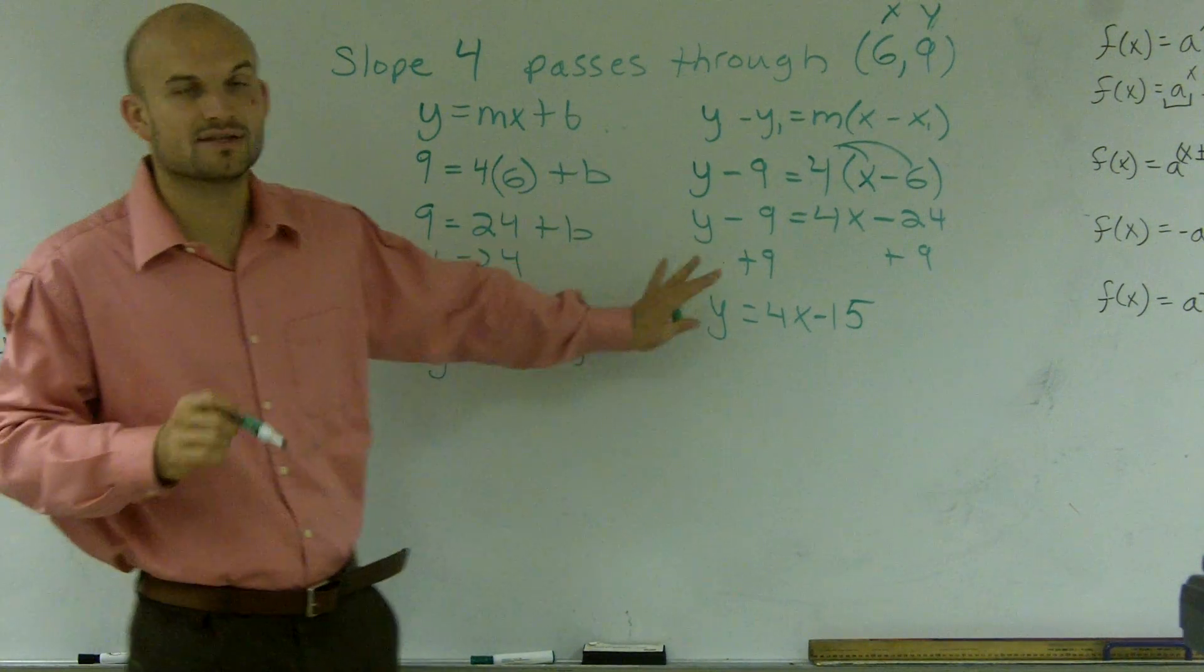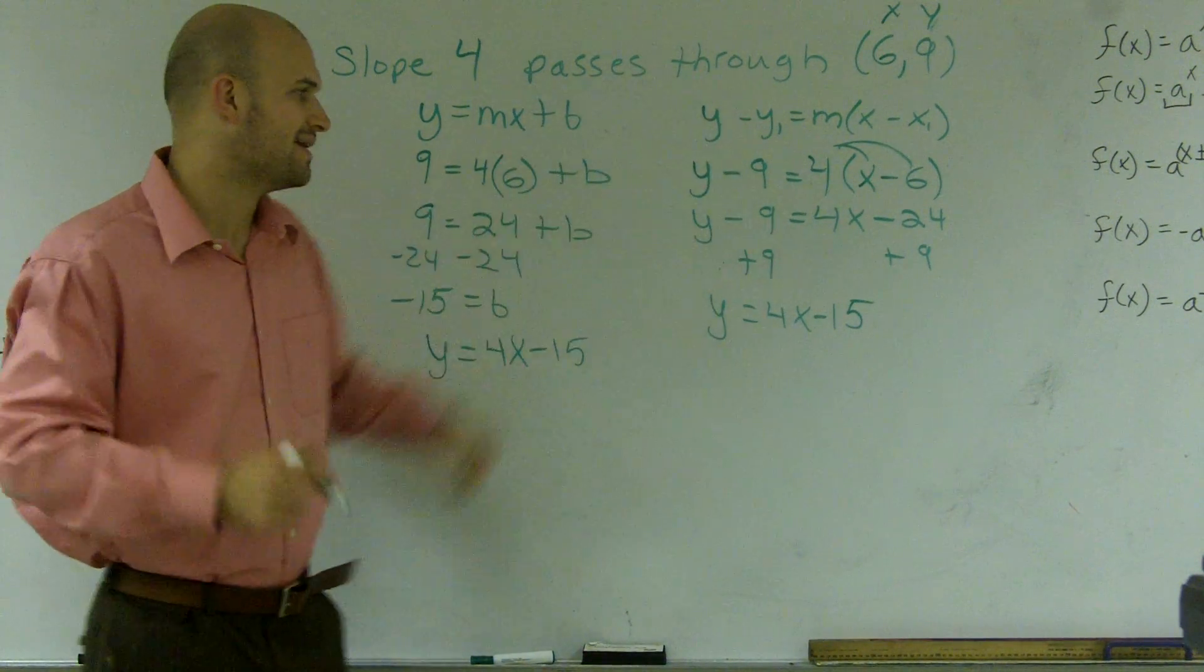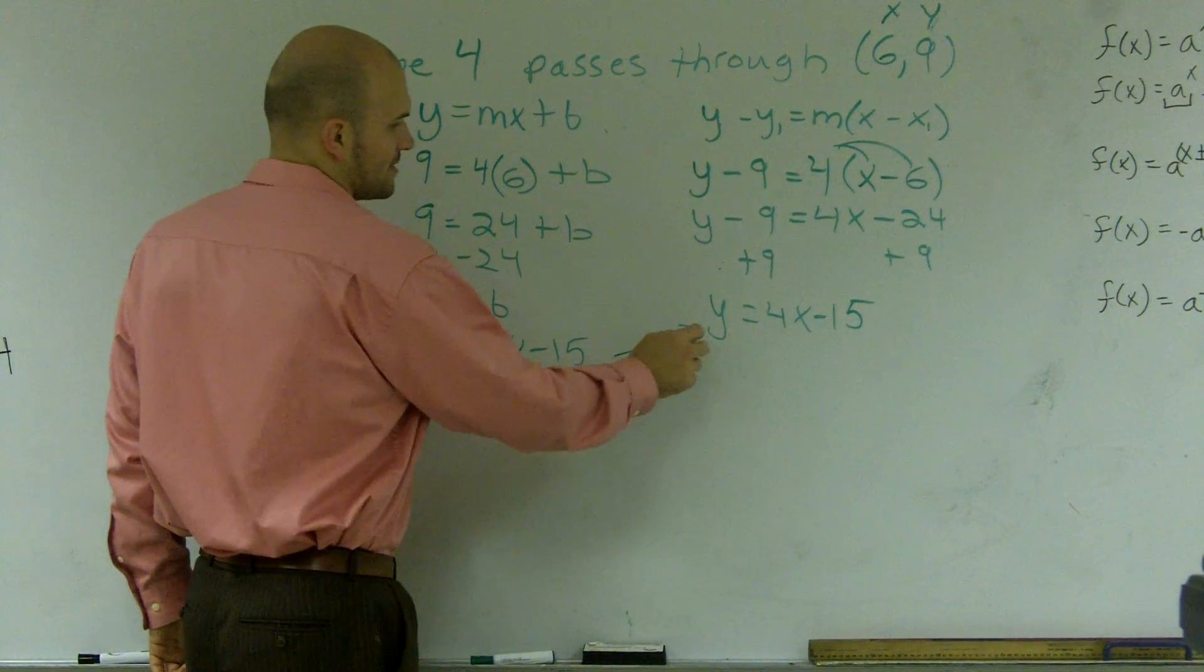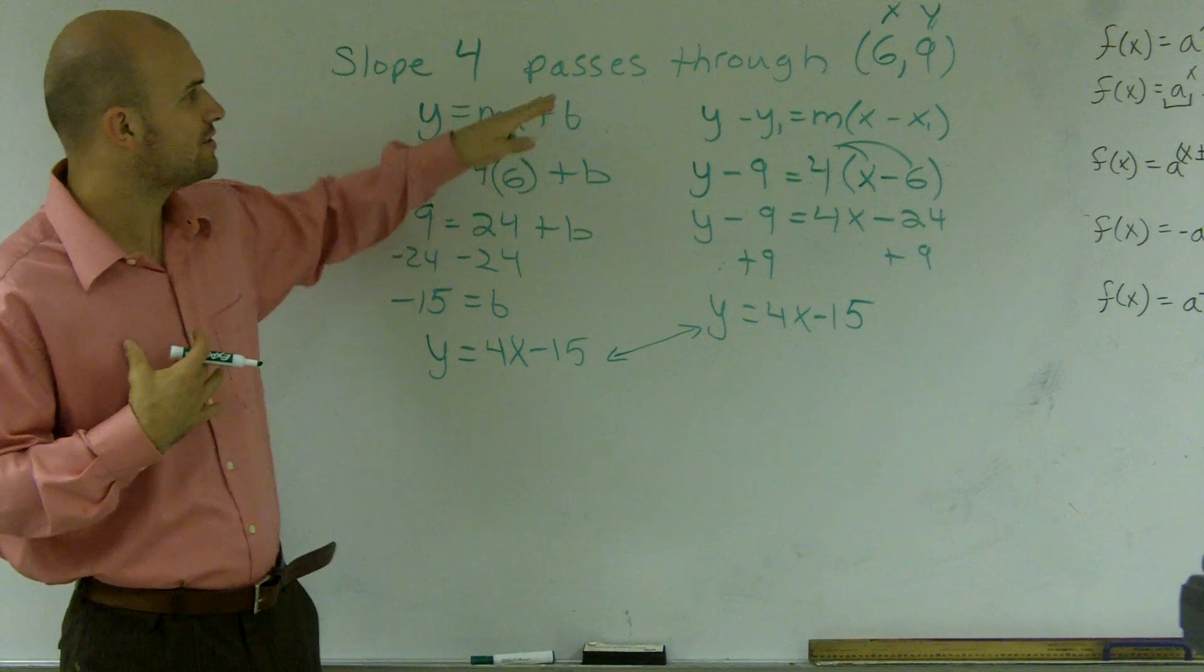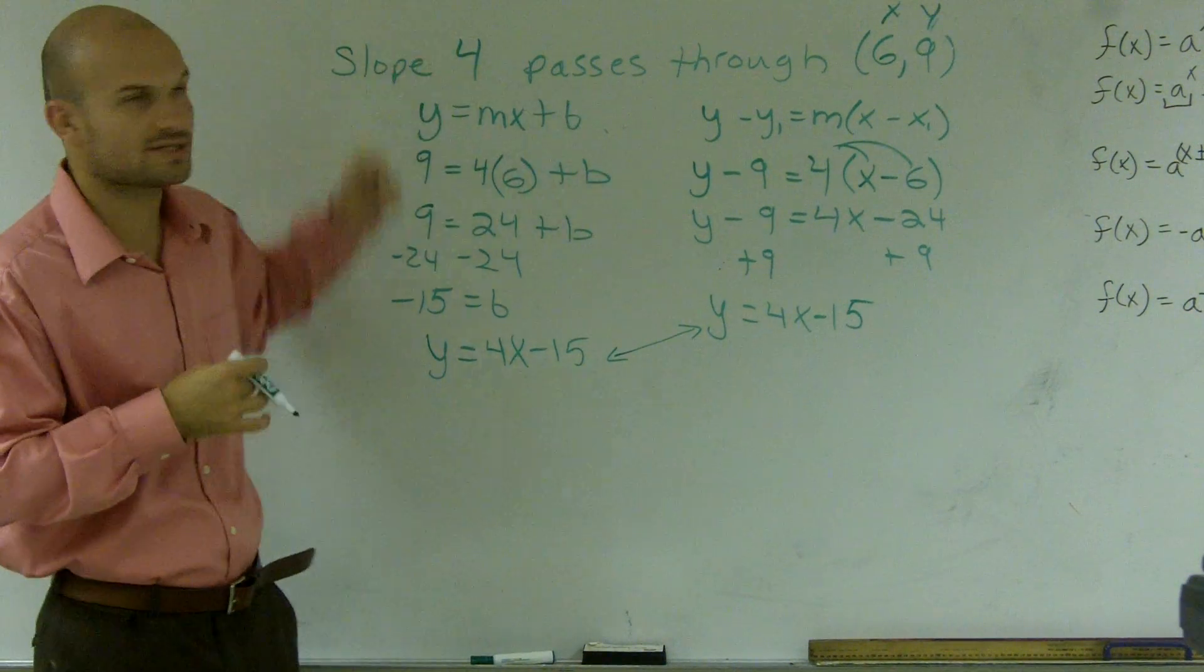And you can see, if I would have done this the same way using slope-intercept form, I get the exact same answer. So that's how you find an equation going through the point (6, 9) with the slope of 4.